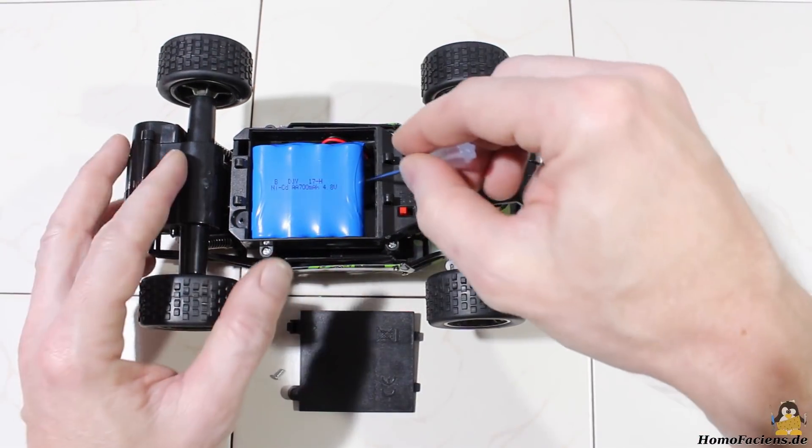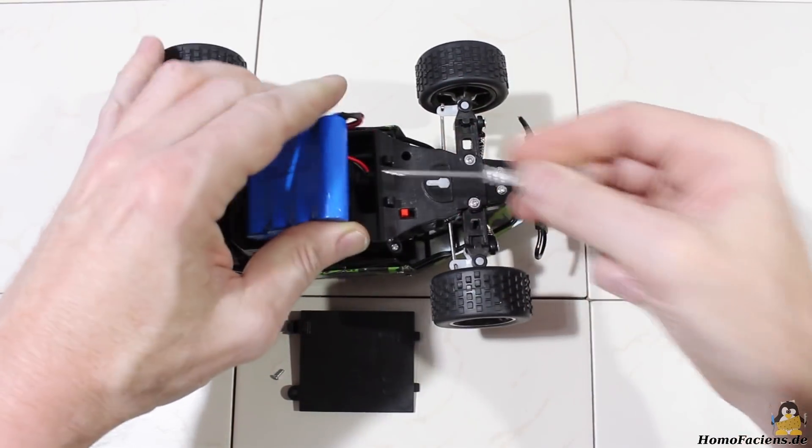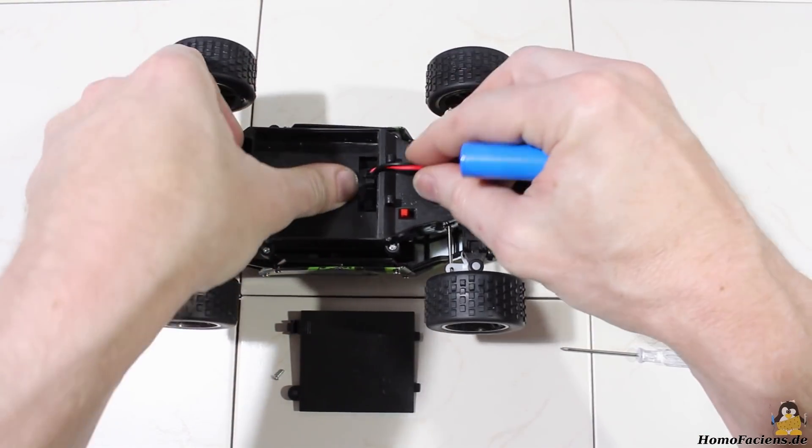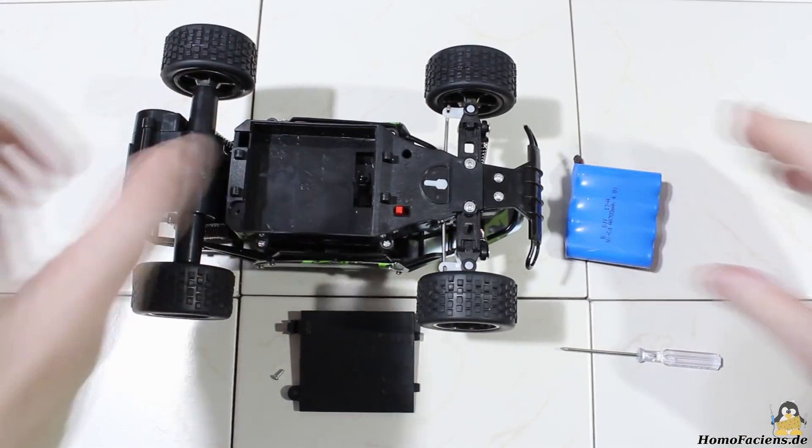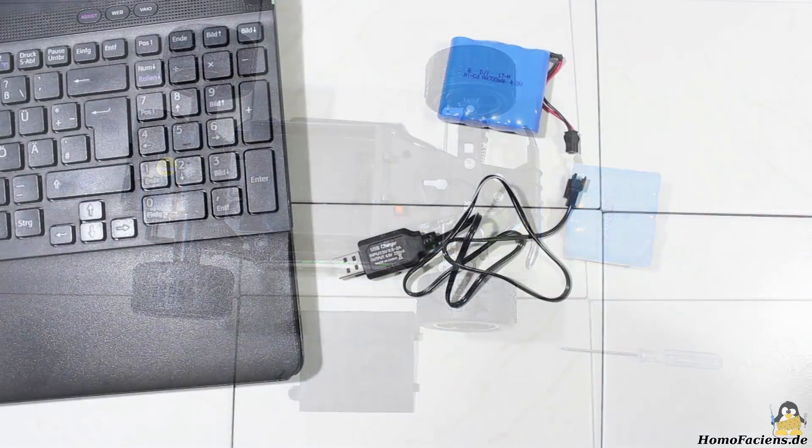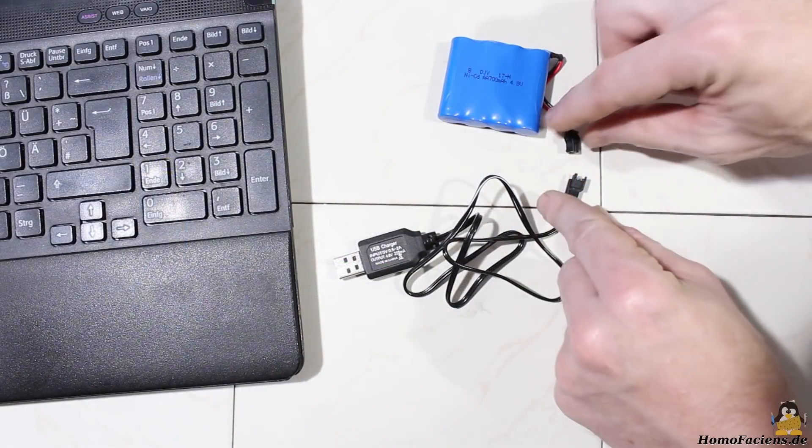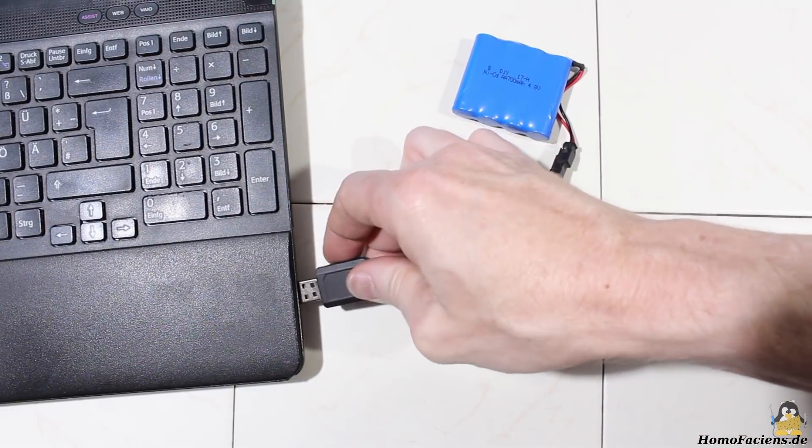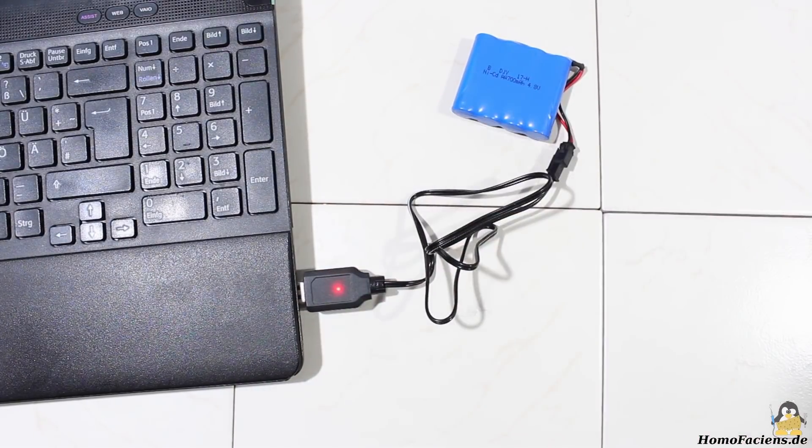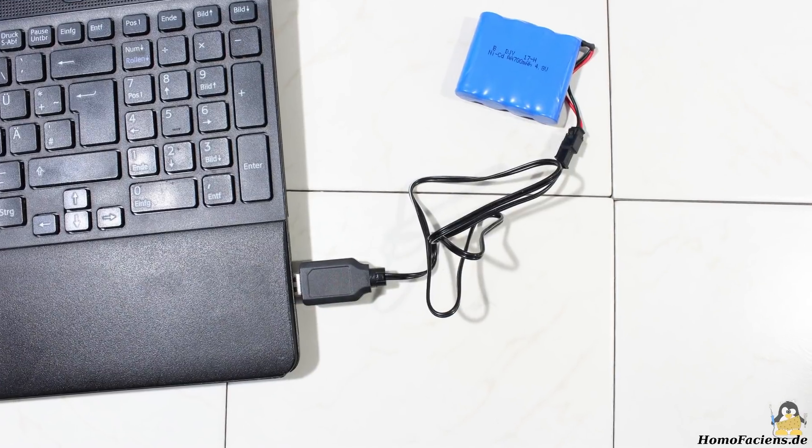That battery is placed in a box at the bottom of the car. The cover is fixed with a screw and a matching screwdriver is included. The locking mechanism of the plug is a bit fiddly. The battery is charged through a USB cable. The red LED is turned off after approximately 3 hours indicating that the battery is fully charged.